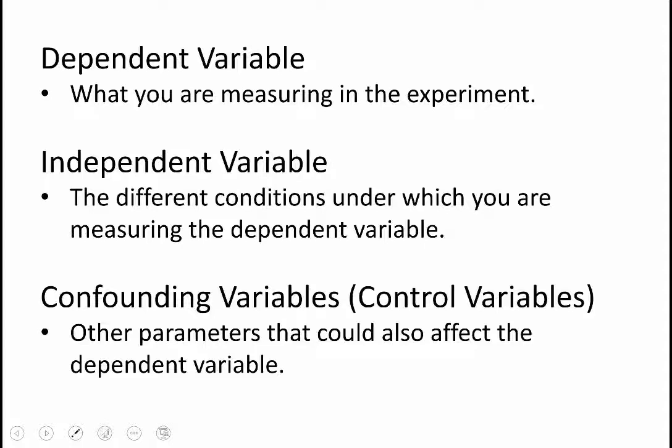Confounding variables, sometimes called control variables, are all the other parameters and variables that have the potential to impact your dependent variable. To ensure that you're testing one thing at a time and you can attribute the change in your dependent variable to what you're doing with the independent variable, you want to check that these variables aren't changing much or control them so they don't change.